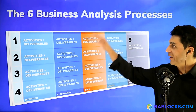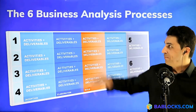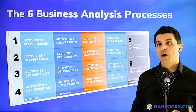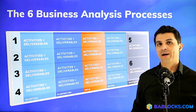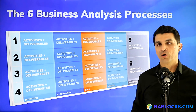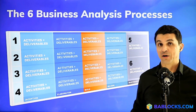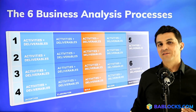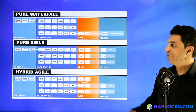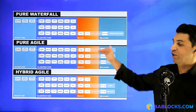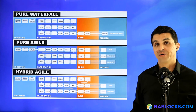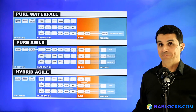There are actually six different business analysis processes that you'll have to follow depending on the type of work you're assigned by your employer, your clients, or whoever you're working for. Each of these six different processes can also be executed slightly differently depending on the execution methodology that your employer uses in the organization that you're at.